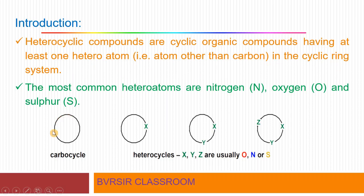Observe this: if this is the cyclic ring system and all the atoms in the cyclic ring system are carbon atoms, then it is called a carbocyclic compound. Instead, if at least one heteroatom is present — heteroatom meaning an atom other than carbon — then those types of cyclic organic molecules are called heterocyclic compounds.